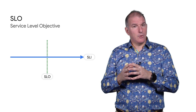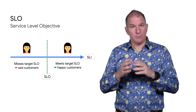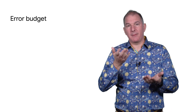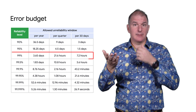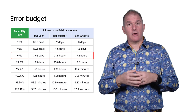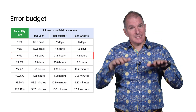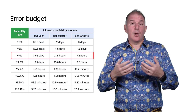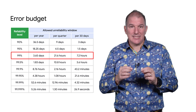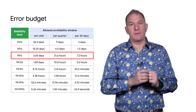An SLO describes when a service is reliable enough to meet user needs. An error budget is just a complement of the SLO. So if your team chooses 99% as a reliability target, the error budget will be 1%. That 1% is the acceptable level of unreliability. You allocate the error budget to maximize your development velocity while maintaining the reliability of your service.